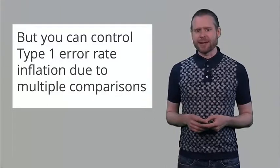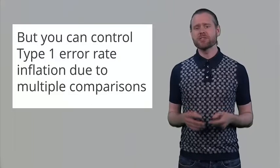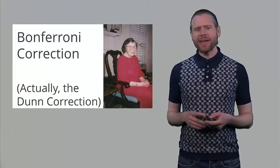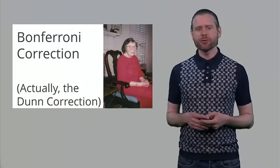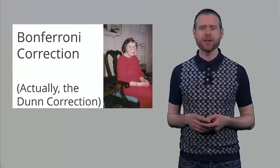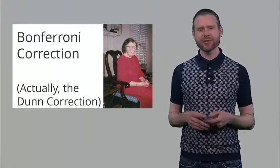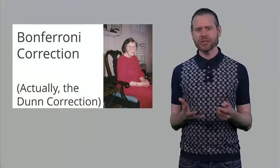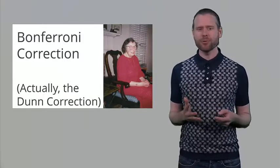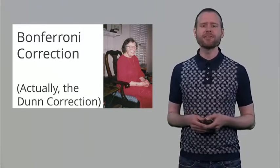You can control the Type 1 error rate by designing your study well and adjusting the alpha level. The most common and easiest way is the Bonferroni correction — better named the Dunn correction after Professor Dunn, who actually came up with this idea. She found nothing in the scientific literature using this before, noting it might be so simple that people just didn't think about it. Until it was discovered by Professor Dunn, nobody had come up with it.